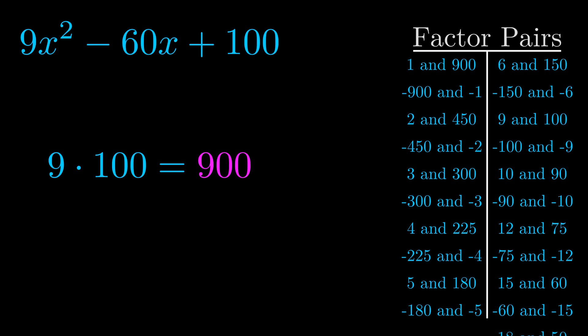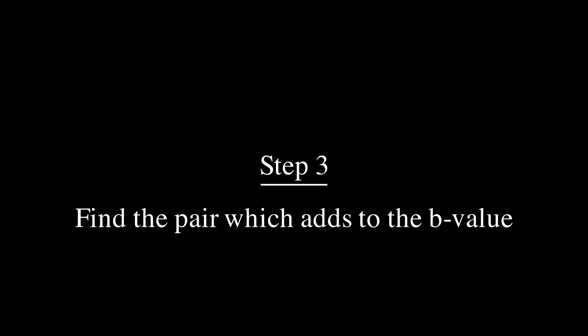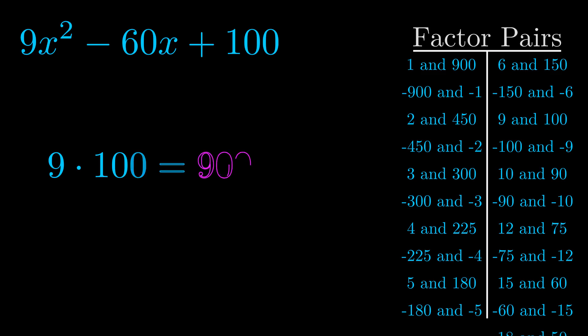Now once you have these factor pairs, the goal is to find which of these pairs adds to the b value. The b value is the coefficient on the x term. That's the middle term, the one that we haven't done anything with yet. And really this is the only factor pair that we need.